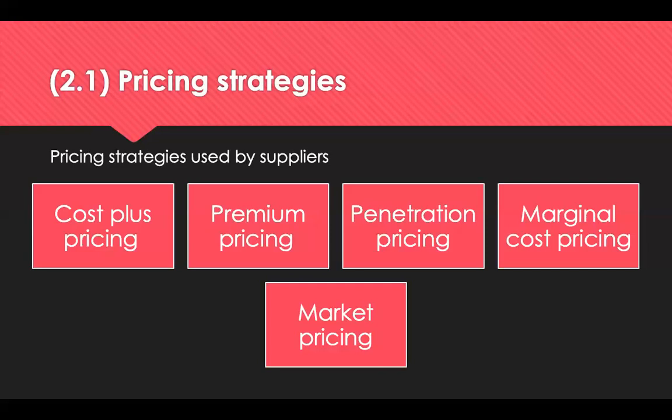Marginal cost pricing is where the supplier recovers only the variable cost elements in its price, so the price will be well below the market price. If the supplier is near full capacity, goods and services are often sold at a lower price without profit. Market pricing is where the supplier sells in line with what the market is prepared to pay. The market price may be forced artificially high by cartel pricing, which is illegal.